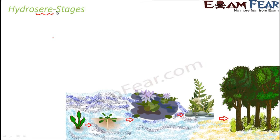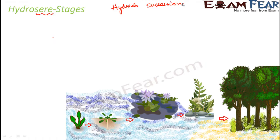Now, what is hydrosere? Hydro means water. So the succession in water is known as hydric succession, and the stages of development of hydric succession collectively are known as hydrosere.